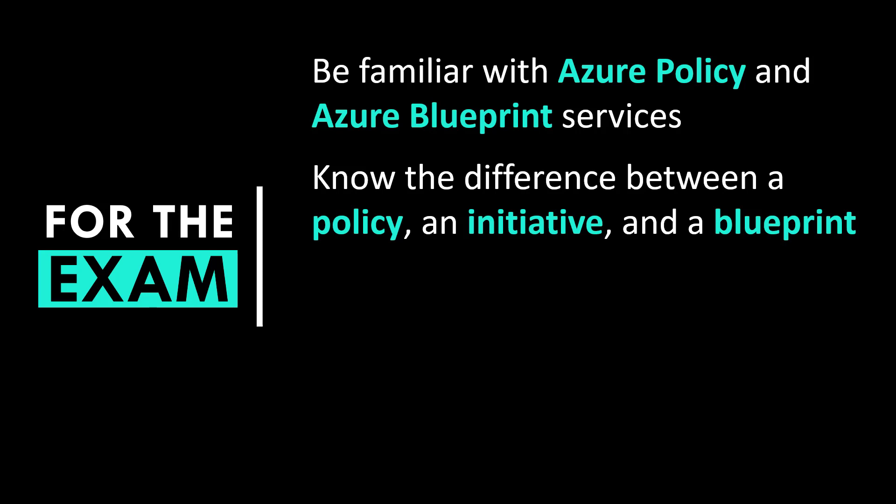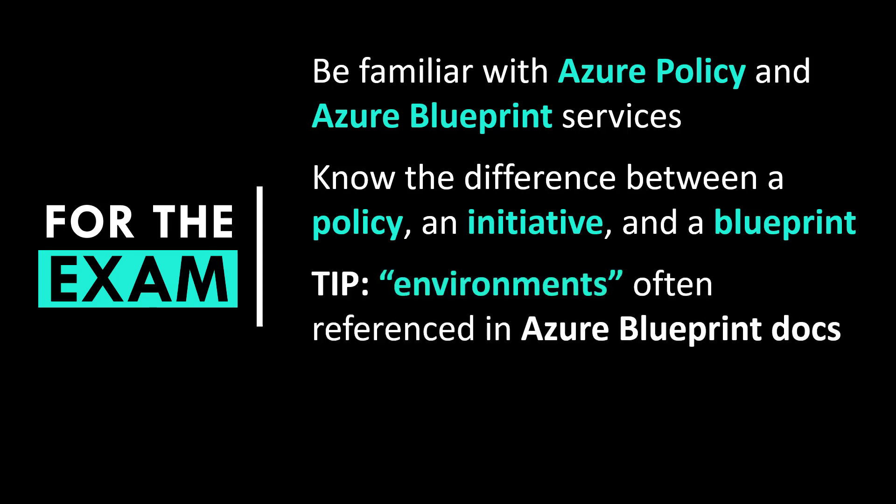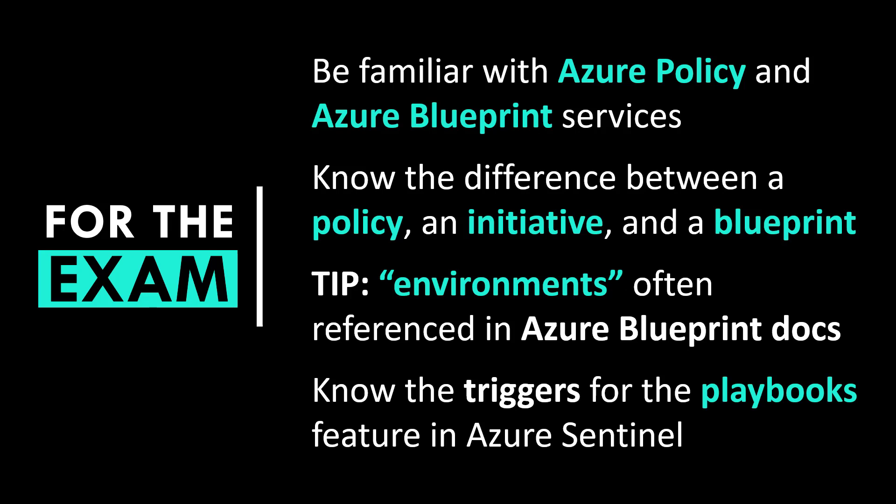A policy is what we use to enforce different rules and effects over resources so they remain compliant with IT governance standards. An initiative is a collection of Azure Policy definitions grouped together towards a specific purpose. A blueprint is a declarative way to orchestrate deployment of various resource templates and artifacts — like role assignments, policy assignments, ARM templates, even resource groups — and is frequently used as a way to standardize new environments. Know the triggers for the playbooks feature in Azure Sentinel, because those playbooks are logic apps with specialized triggers for Azure Sentinel.